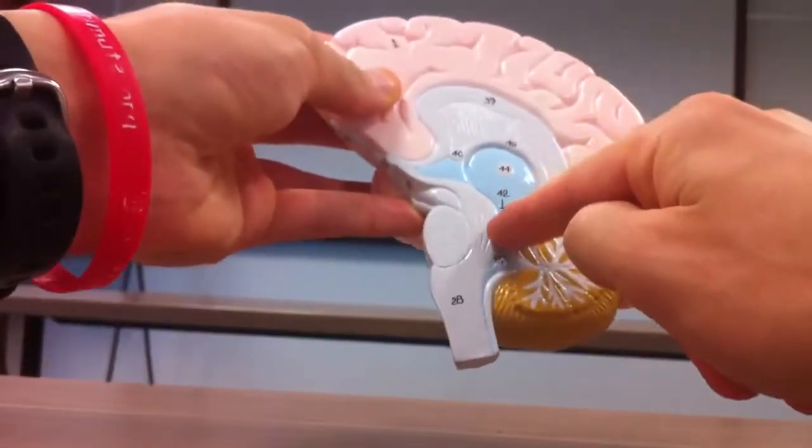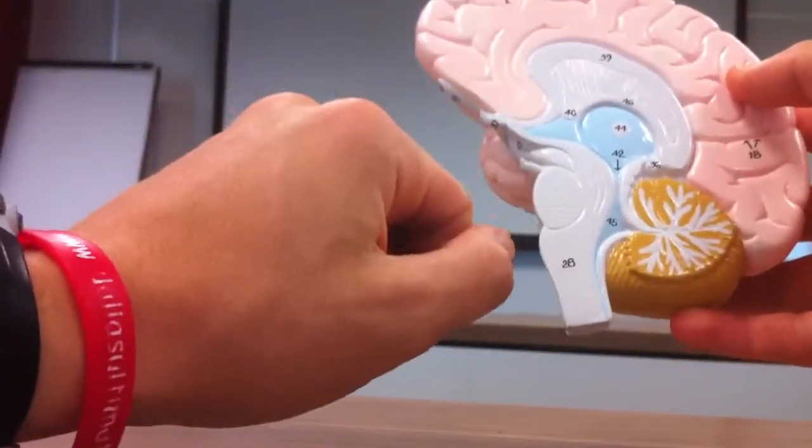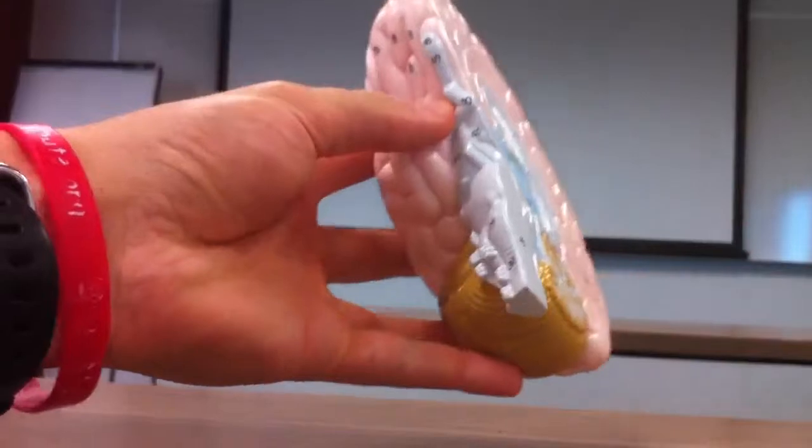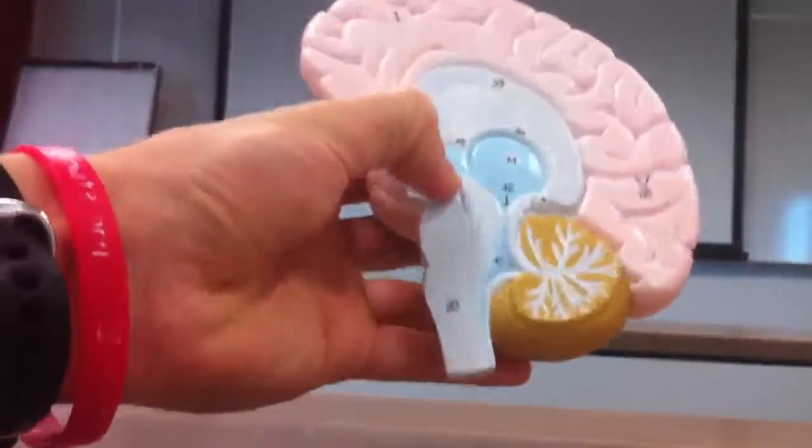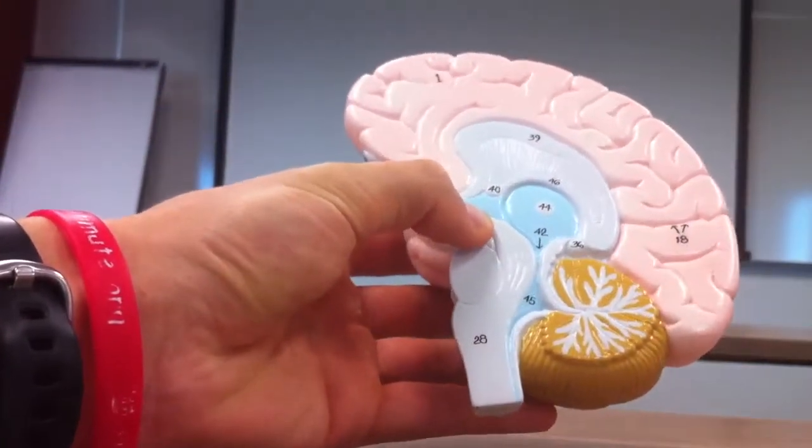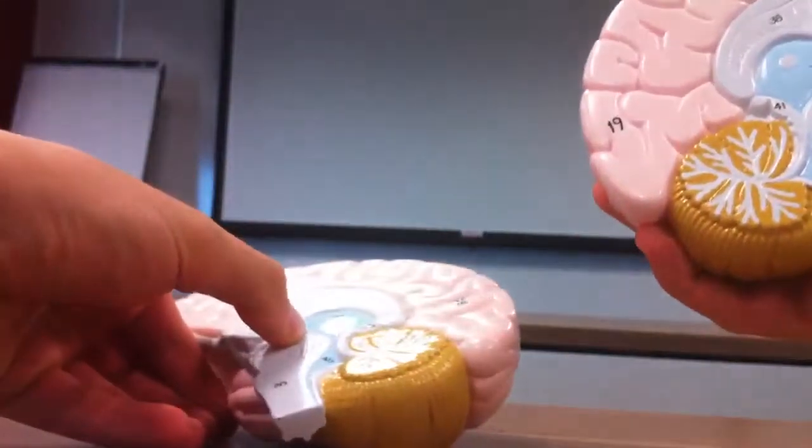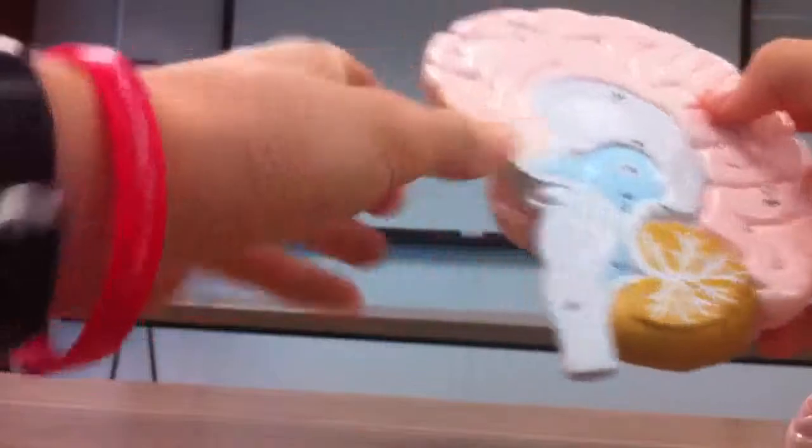42 is the cerebral aqueduct connecting the third and fourth ventricles. 43 is the mammillary body. 44 is the interthalamic adhesion. 45 is the fourth ventricle.